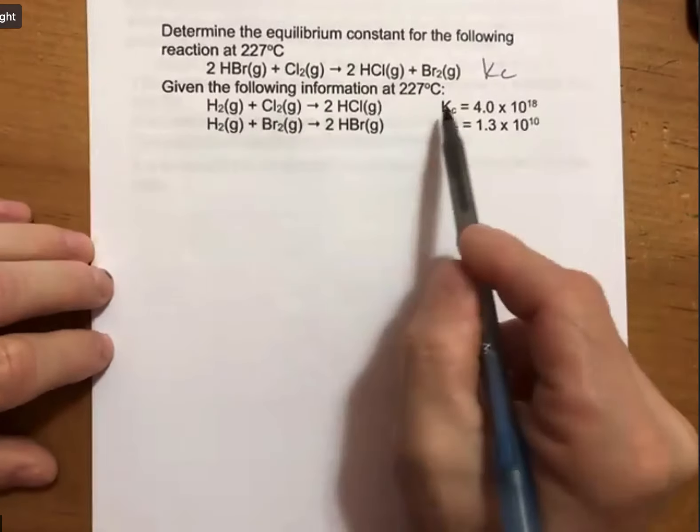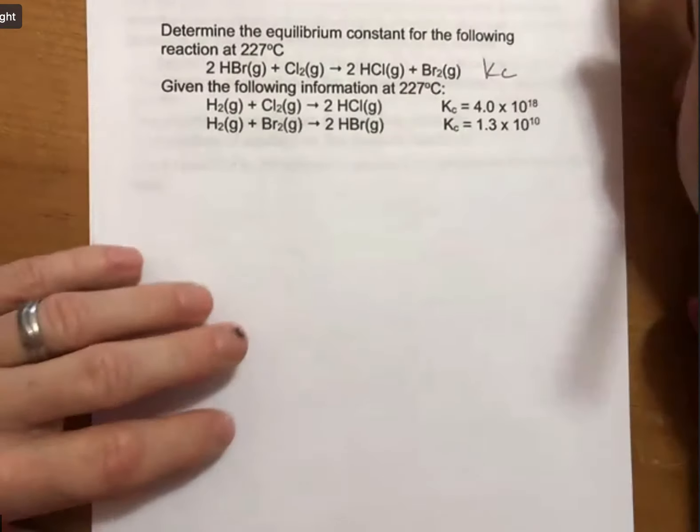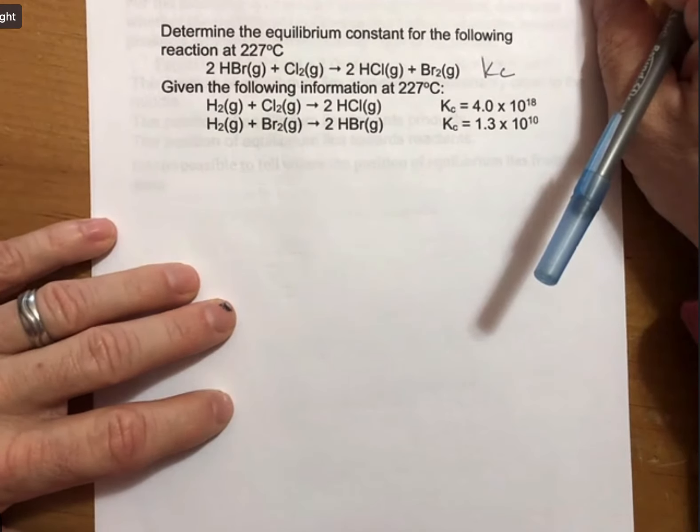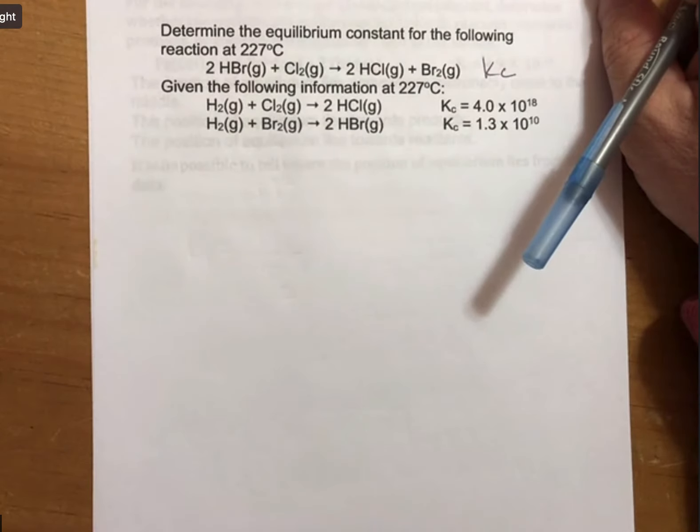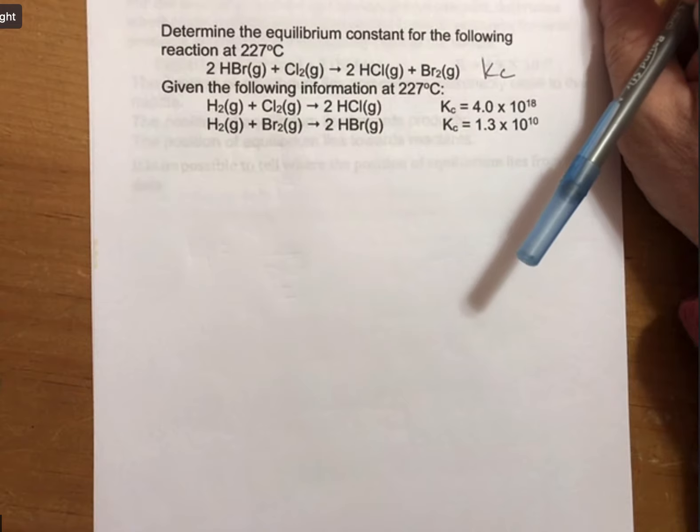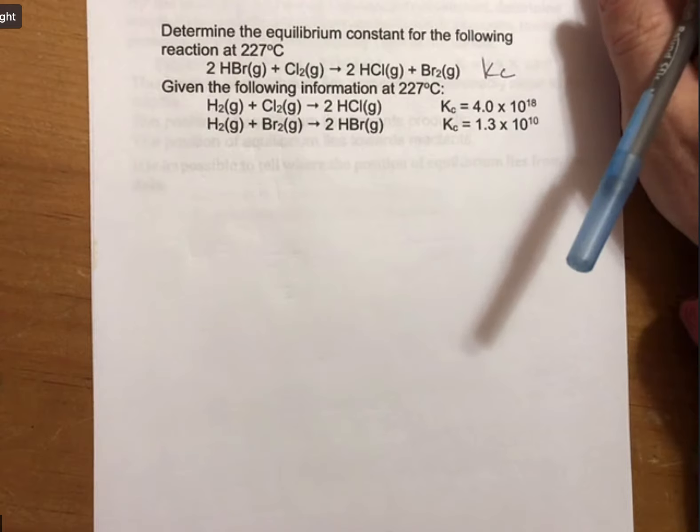We have the equilibrium constants for two reactions, and if this reminds you of Hess's law where you add reactions and then you add delta H values, the rules are different though. What we've seen already is that when we flip a reaction, we actually do 1 over the K value. The general rule of thumb is equilibrium constants, everything is multiplied and divided, whereas delta H values, everything is added and subtracted.